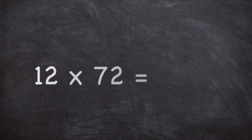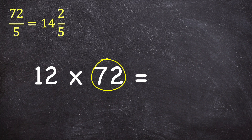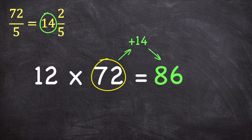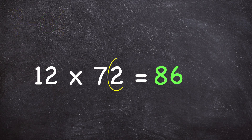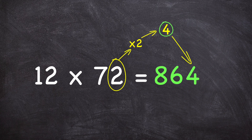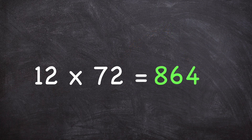Let's try again. To find the product of 12 times 72, you take 72 and figure out how many whole times 5 goes into 72, ignoring the remainder. 72 divided by 5 is 14 and 2 fifths, so you add 14 to 72 to determine that there are 86 tens in the product. Then to get the ones digit, take the ones digit of 72, which is 2, double it to get 4, and use that as the ones digit of the product, making the product 864.